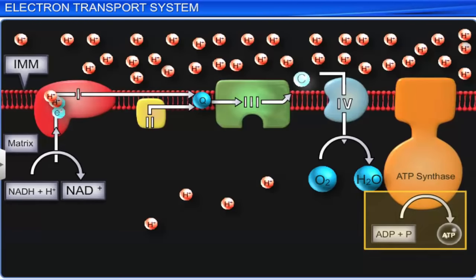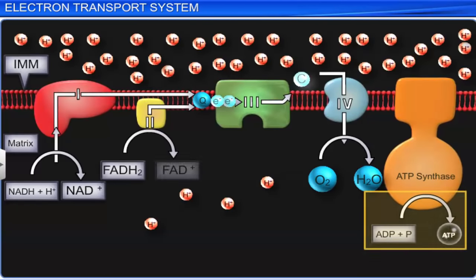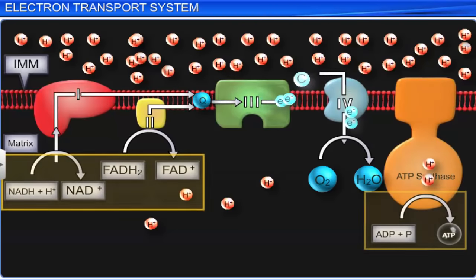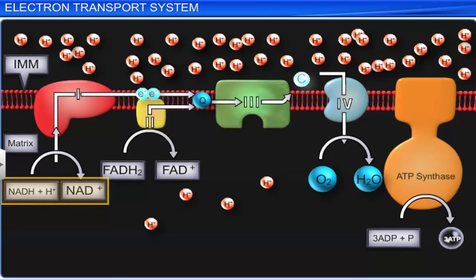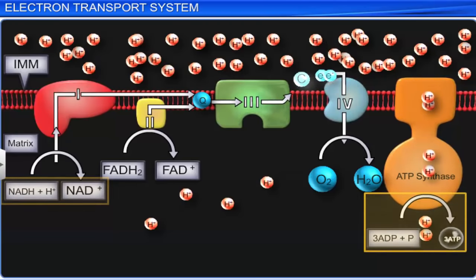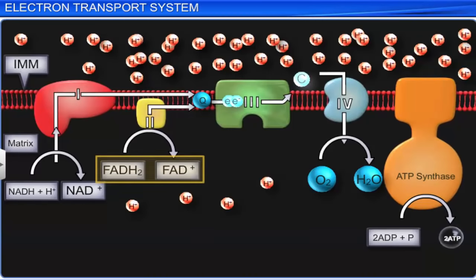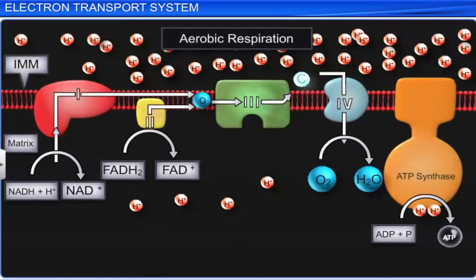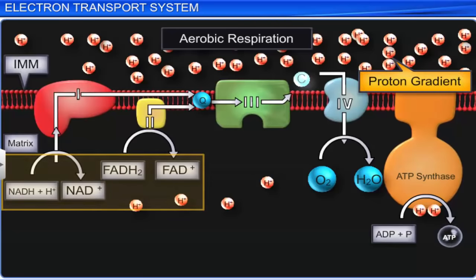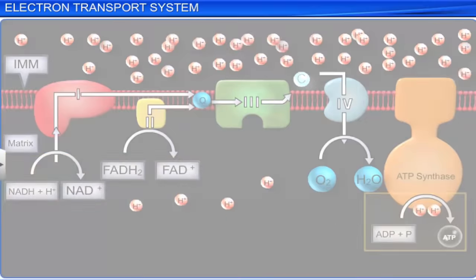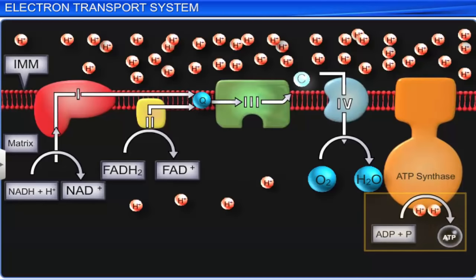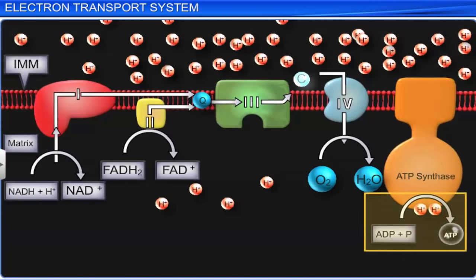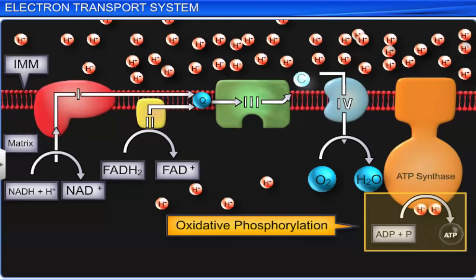The number of ATP molecules synthesized through ATP synthase depends on the nature of the electron donor. For example, oxidation of NADH+ H+ results in 3 molecules of ATP, whereas oxidation of FADH2 results in 2 molecules of ATP. Aerobic respiration uses energy conserved in coenzymes during oxidation-reduction reactions to create the proton gradient required for phosphorylation. Unlike photophosphorylation, which uses light energy, the aerobic respiration process is also known as oxidative phosphorylation.